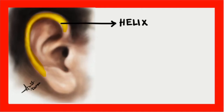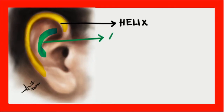Just like the helix, we have another rim which is just over here. This rim that we can see now is known as the anti-helix, because it is just opposite to the helix, so it is known as the anti-helix.